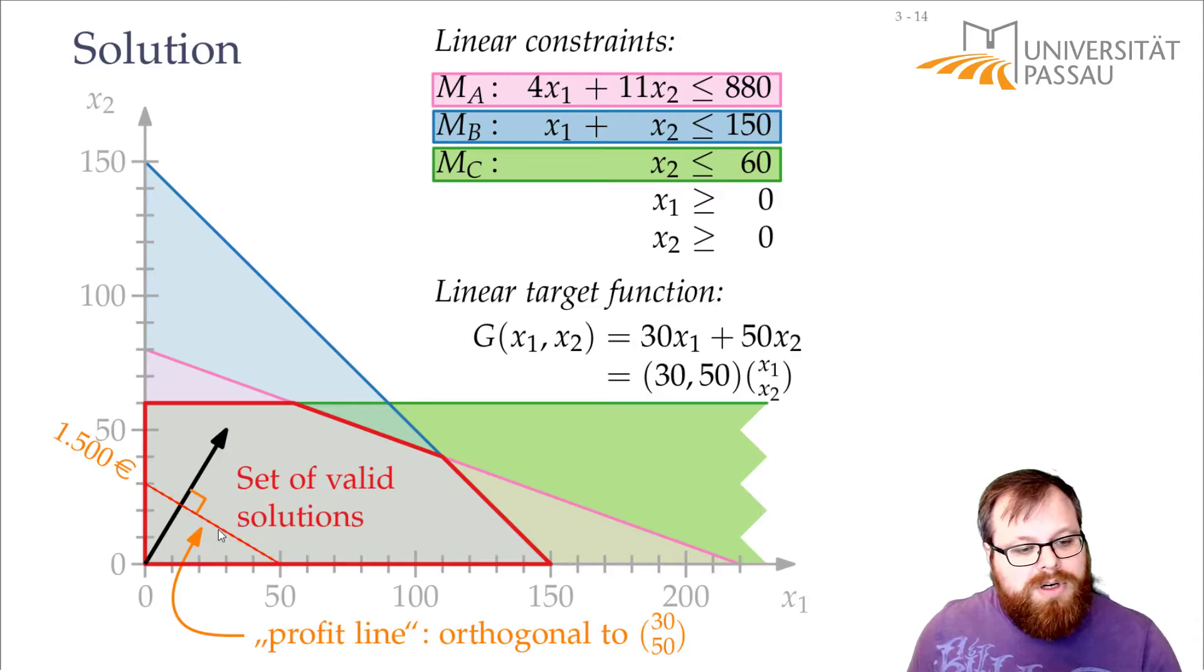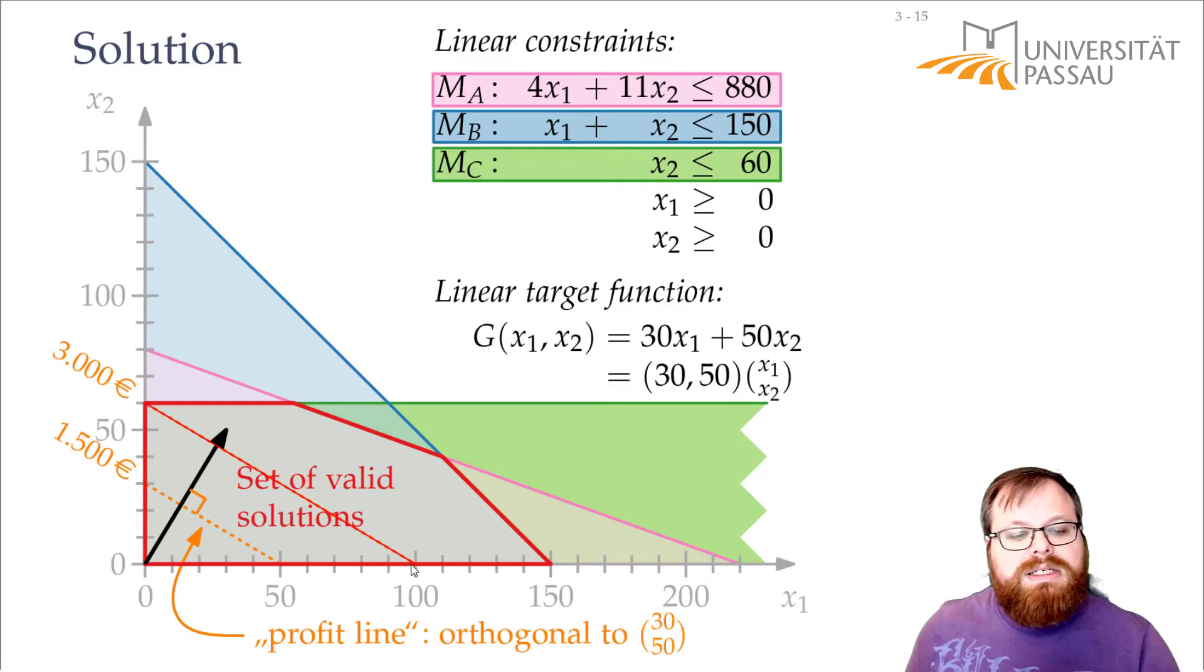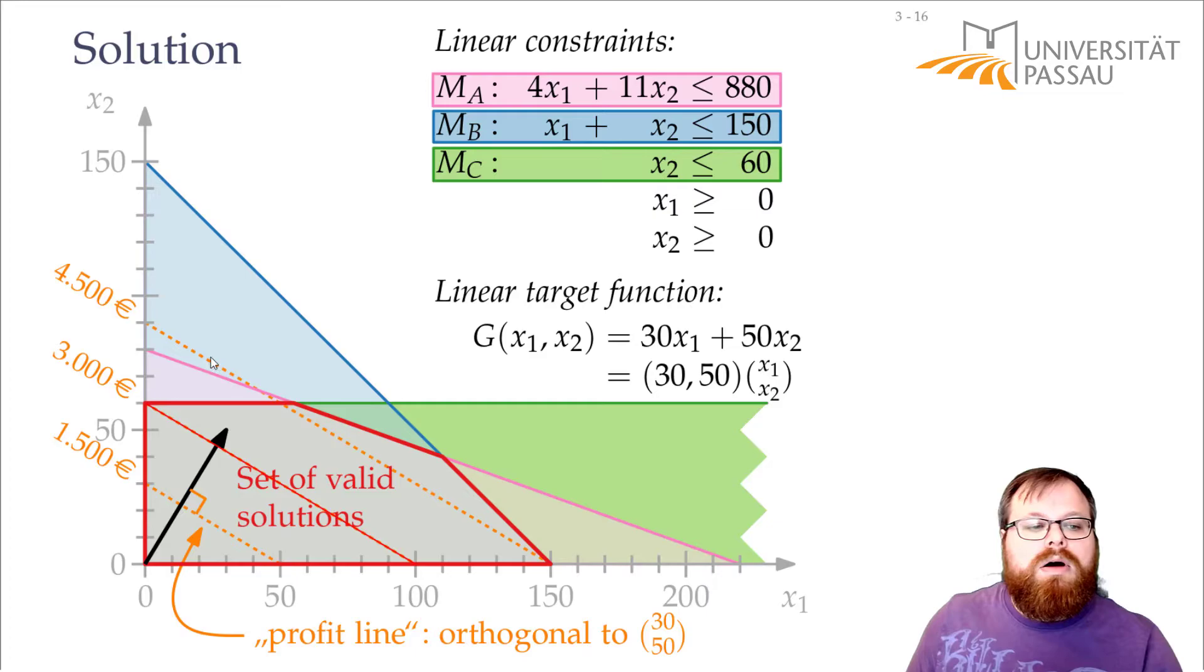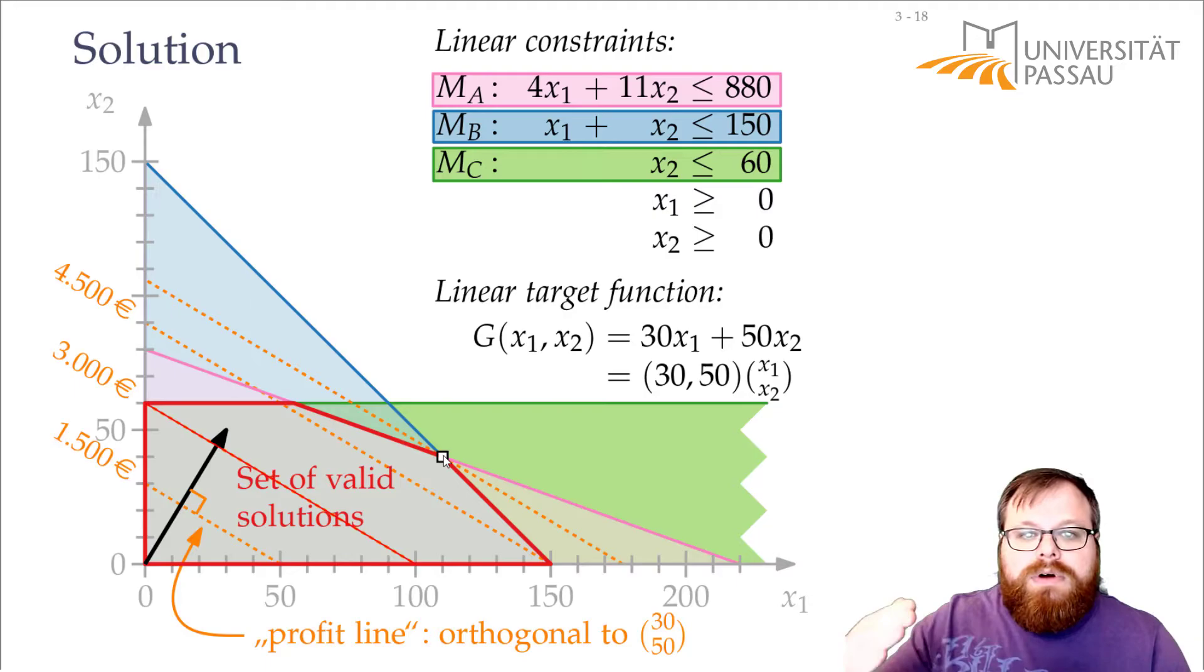So basically we want to maximize this vector within this space. And to do that, we can take the orthogonal of this. This is the profit line. If we look at all the points that lie on this line, all those points give us a profit of 1,500 Euros. If we move this line along this target function vector, the profit will increase. So if we're here on this segment, all the points here give us a profit of 3,000 Euros. All the points here, 4,500. And now we keep moving this line until we get to some extreme point. If we get here and we move it even further, then we don't have a valid solution anymore.